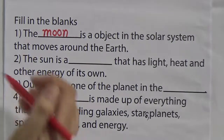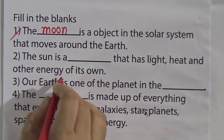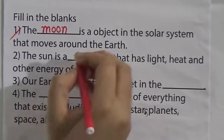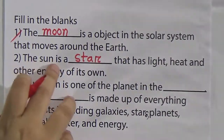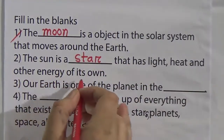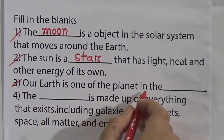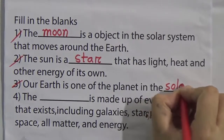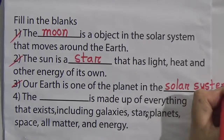Number two: the sun is a blank that has light, heat, and other energy of its own. The answer is 'star.' The sun is a star that has light, heat, and other energy of its own. So we will write 'star.' Number three: our Earth is one of the planets in the blank. The answer is 'solar system.' So we will write 'solar system.'